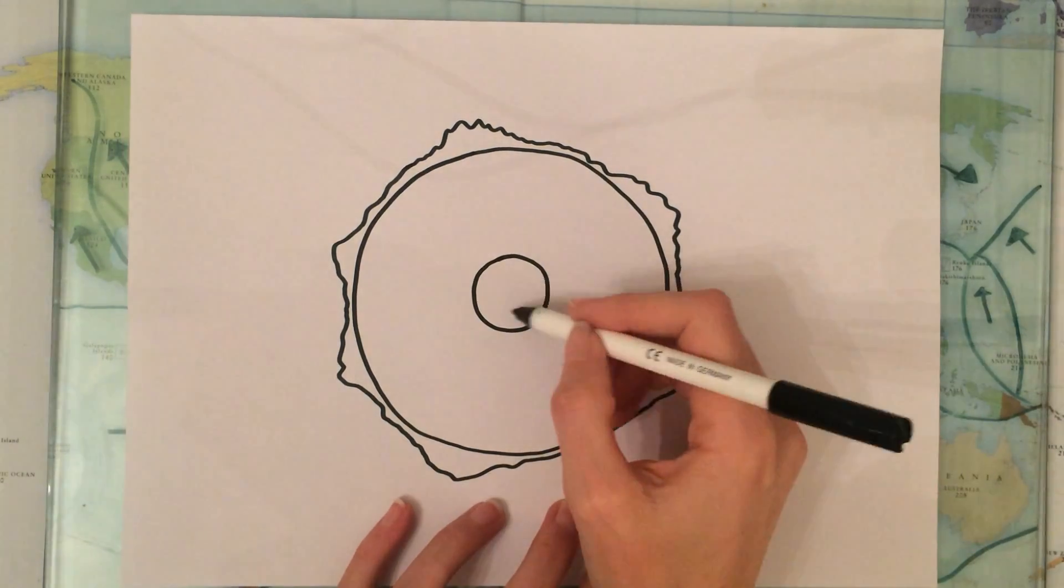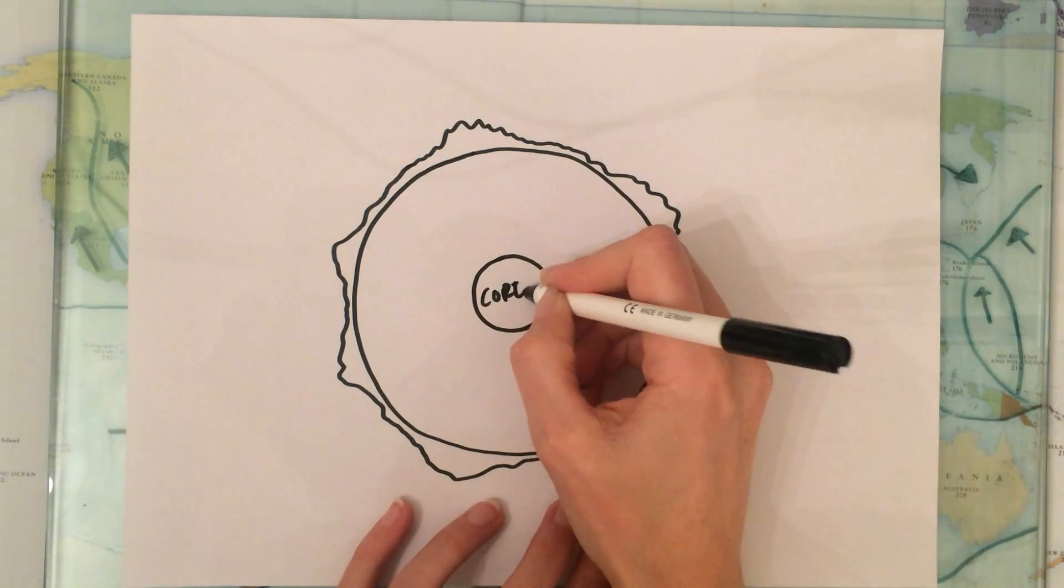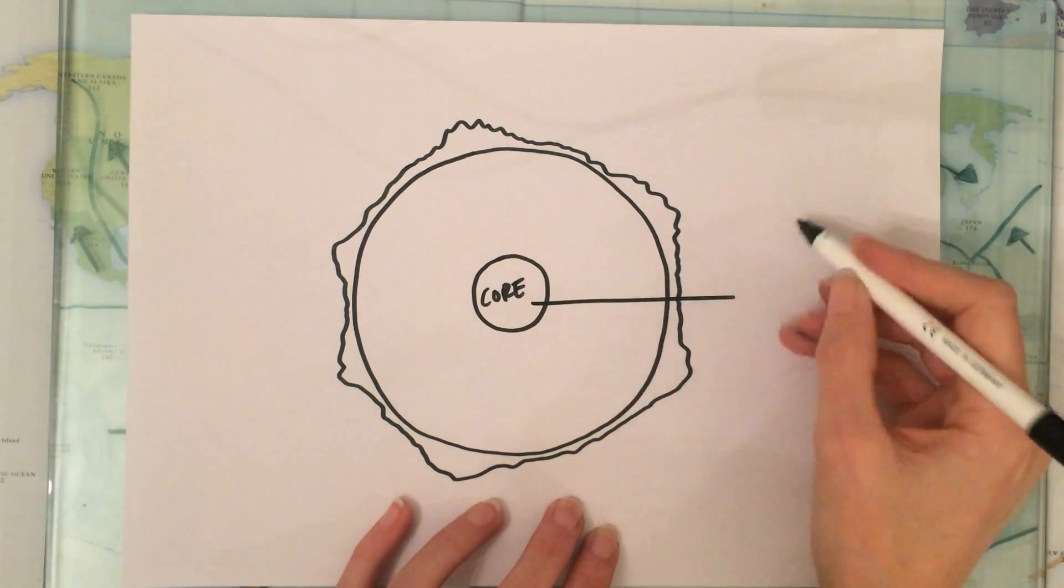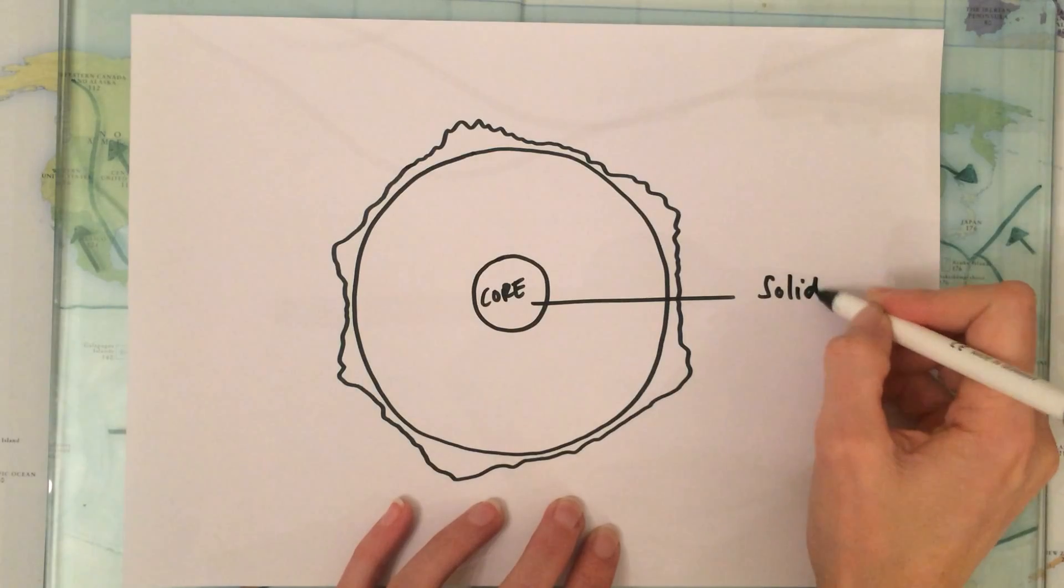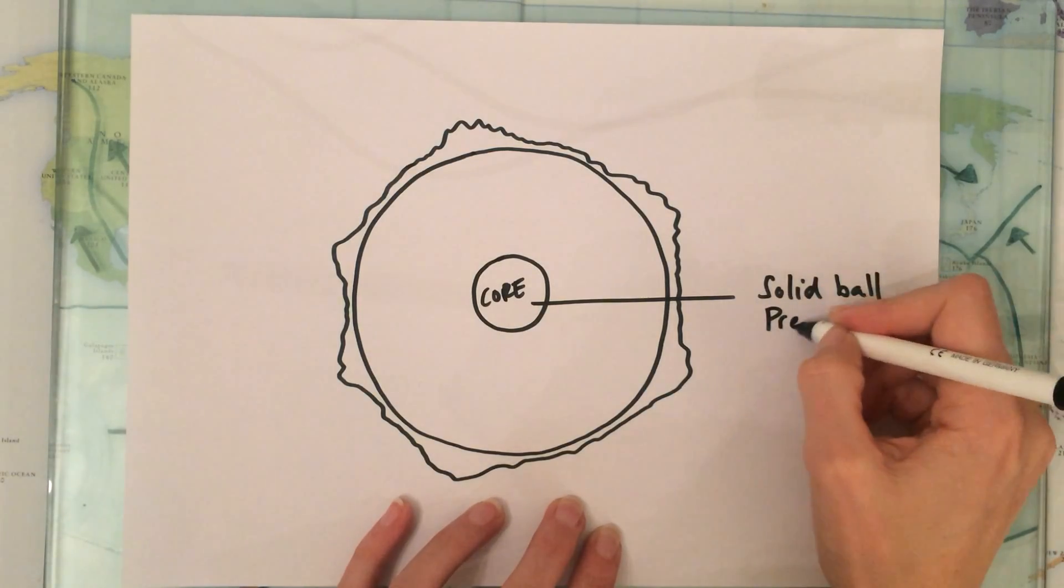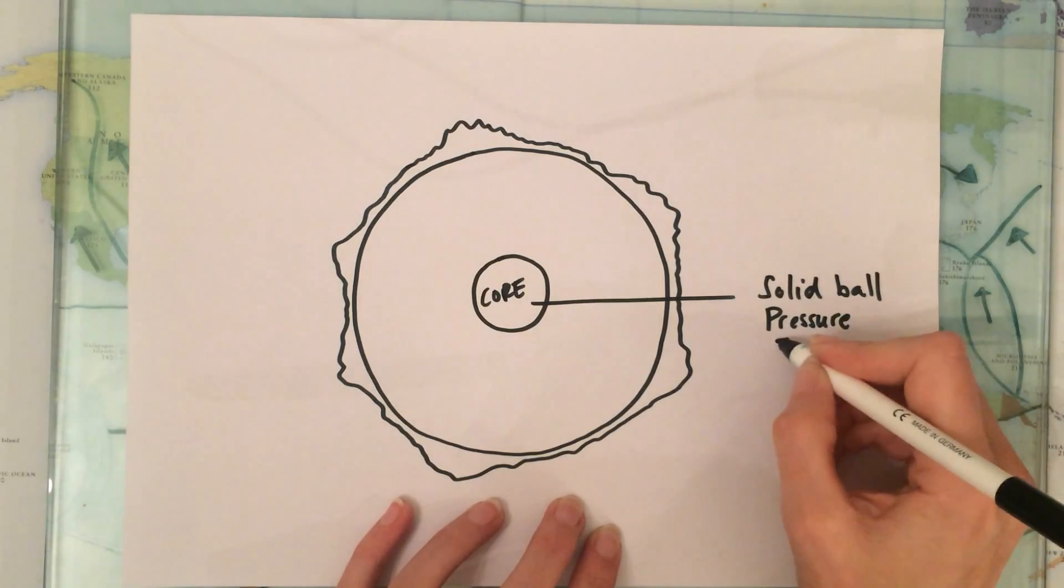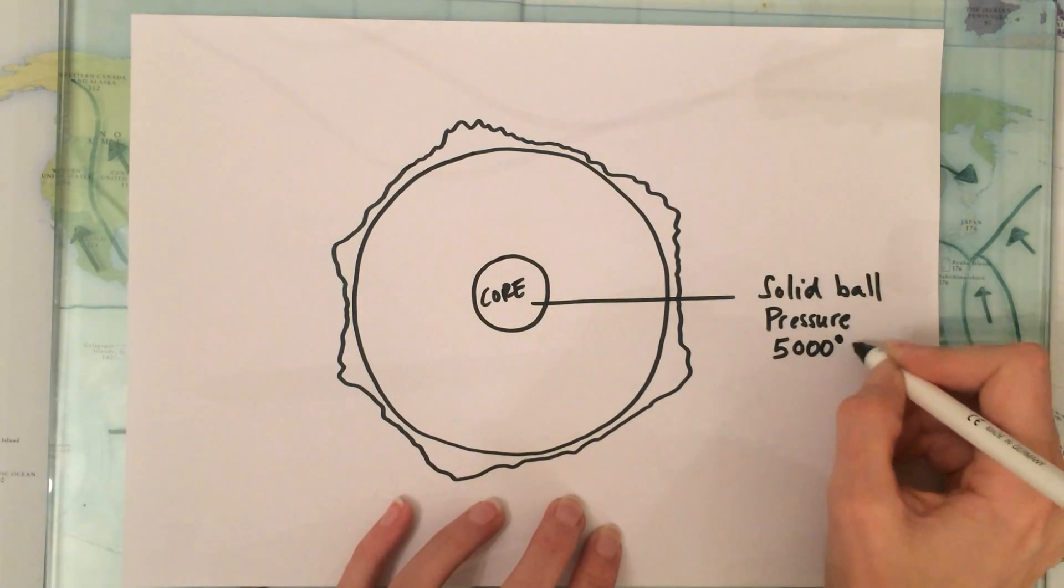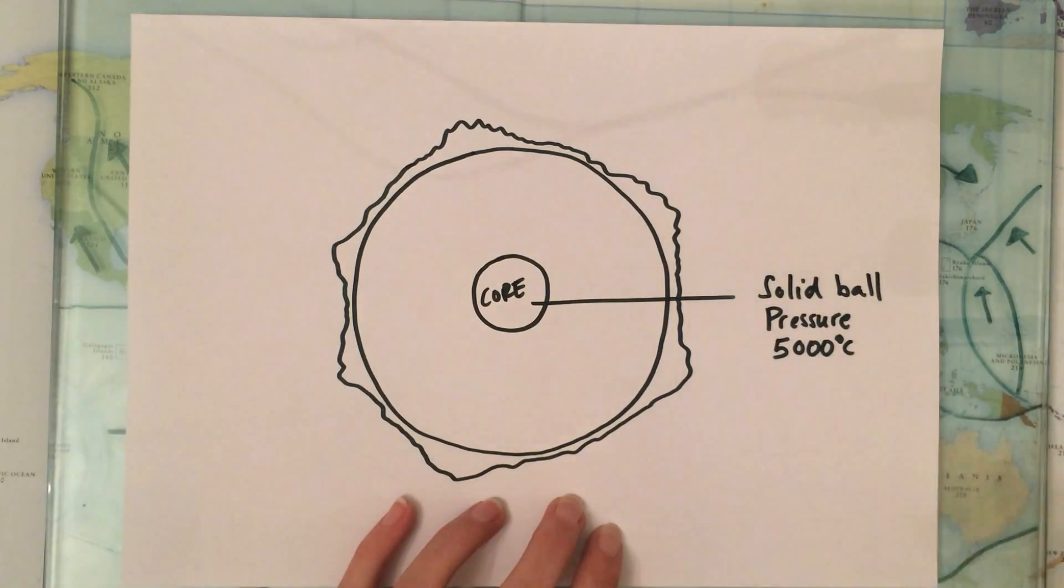The earth's center is known as the core and the core is a solid ball of iron and nickel. It's solid because it's under very intense pressure and it's around about 5,000 degrees centigrade which is really really hot.